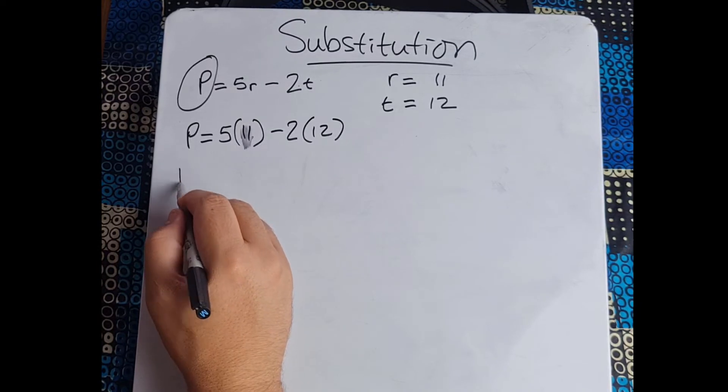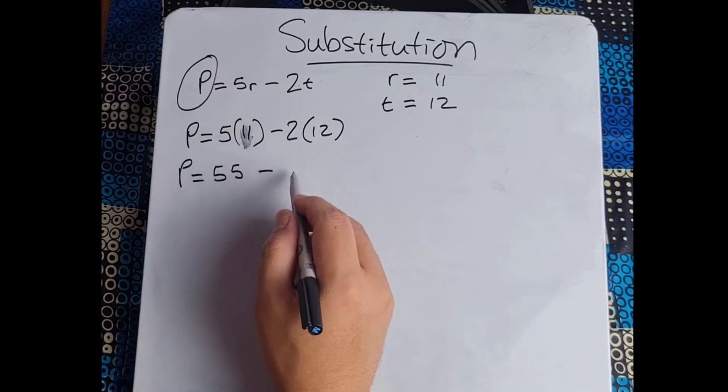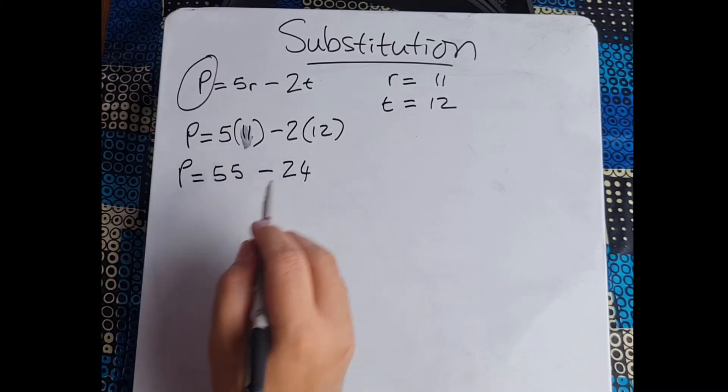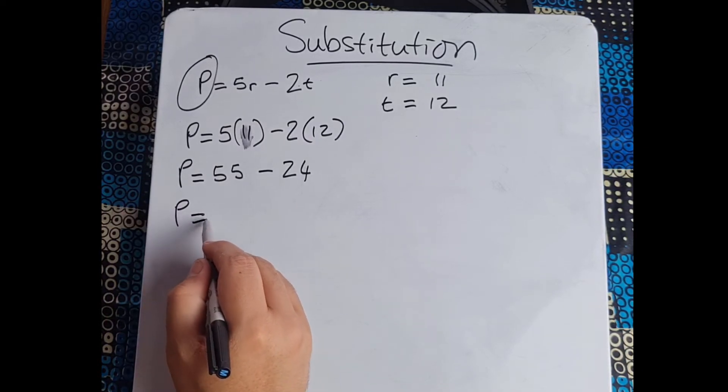So we bring that together now. P equals 5 times 11, we know that's 55, minus 2 times 12, that is 24. So you can see now it comes down to normal figures, 55 minus 24.